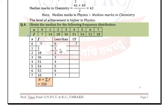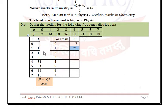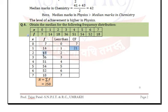For less than 2, add all three values: 7 + 14 + 18 = 39. We add the previous cumulative frequency 21 and 18 to get 39. Then add 36 to get the next cumulative frequency.